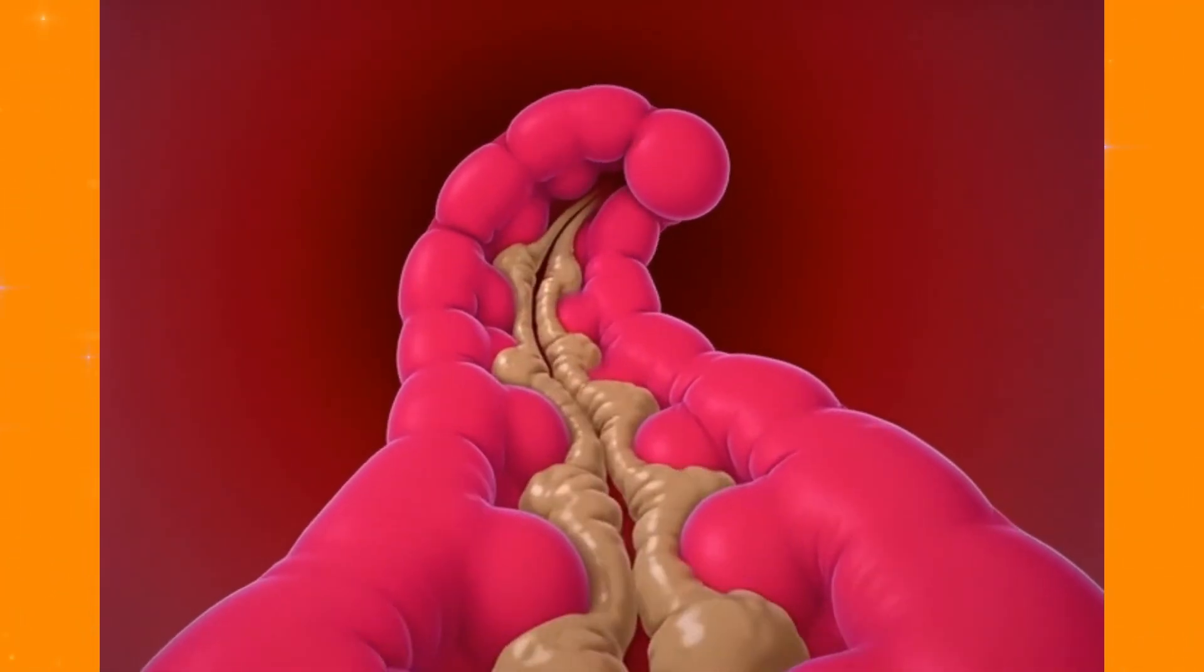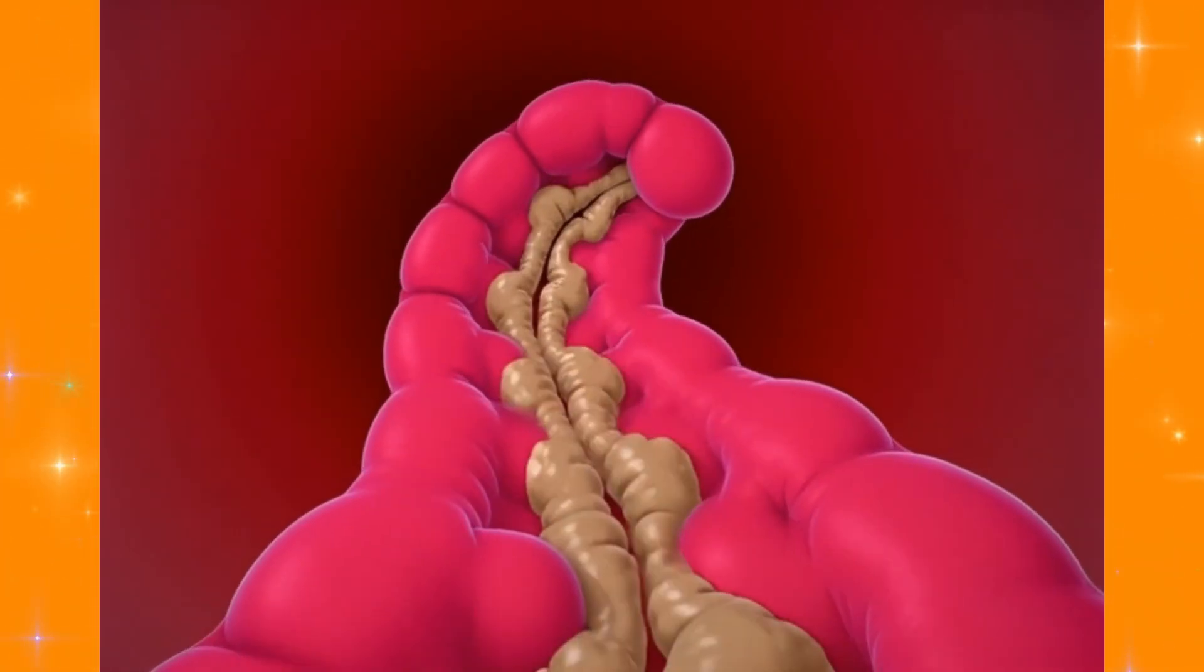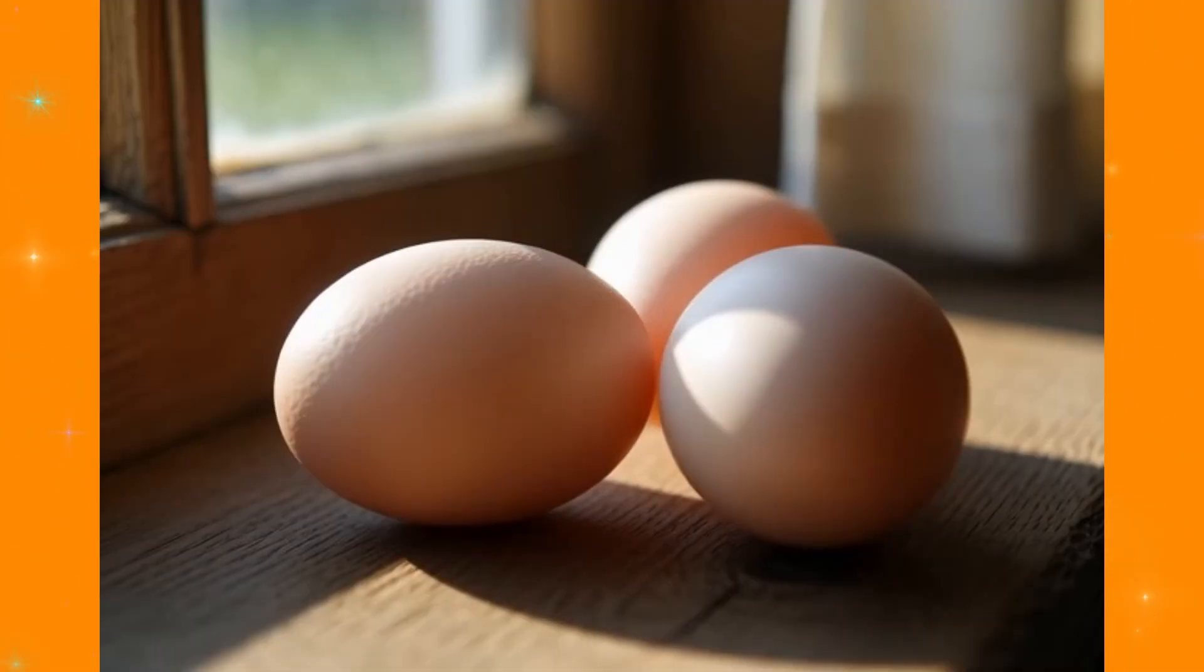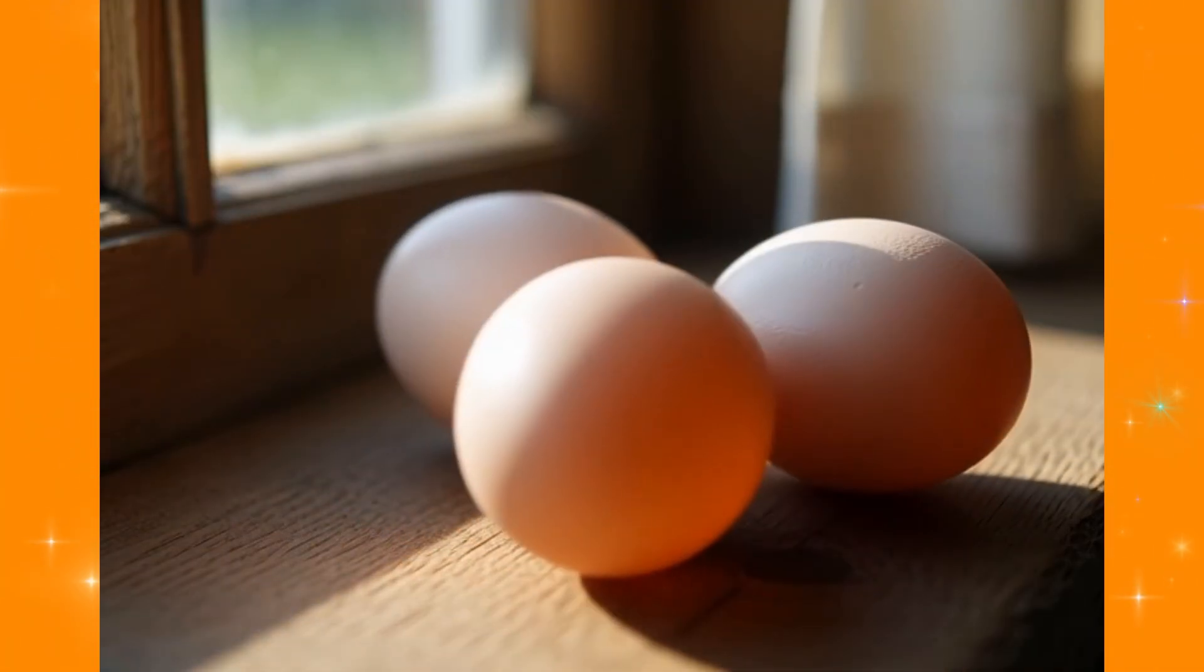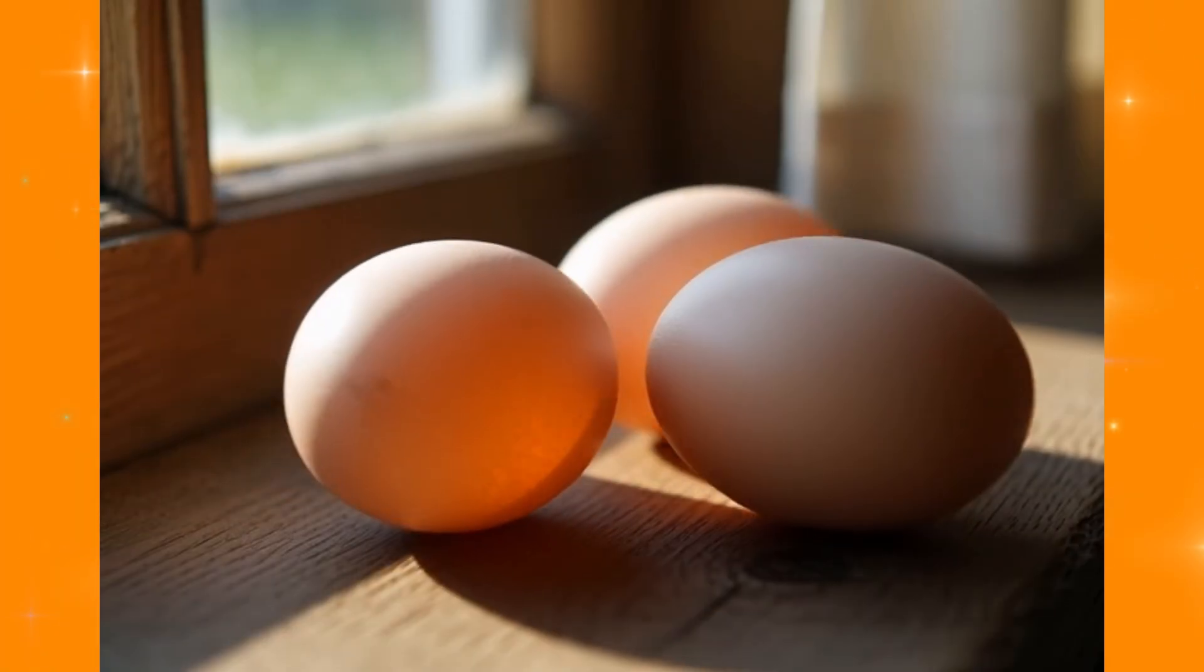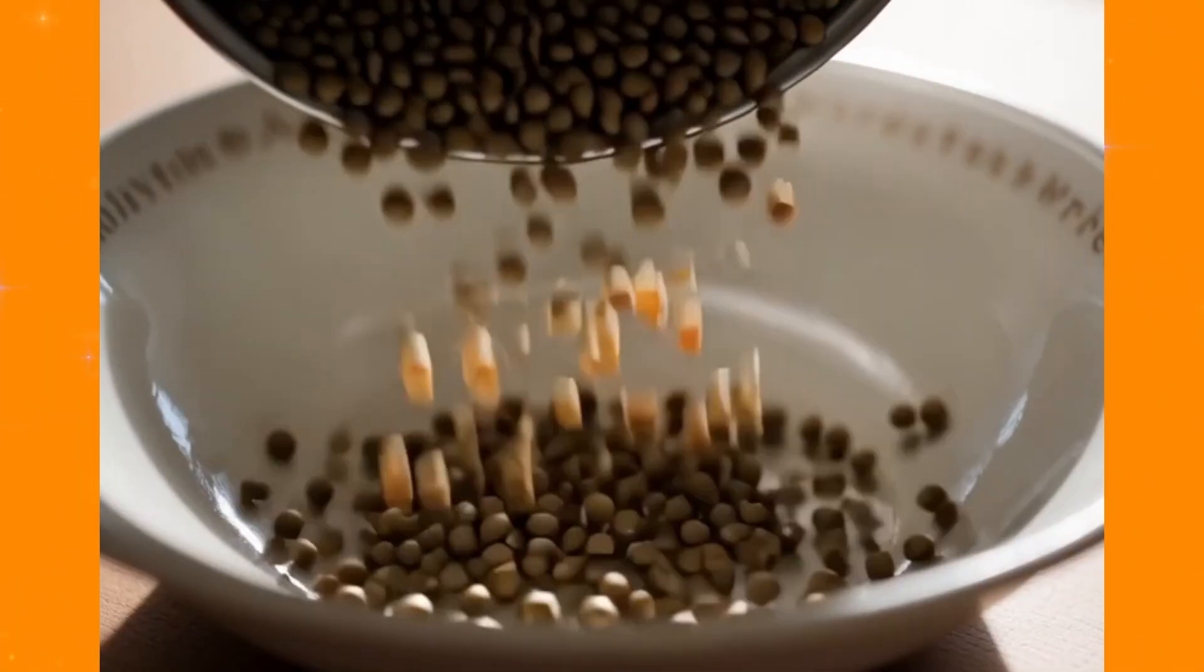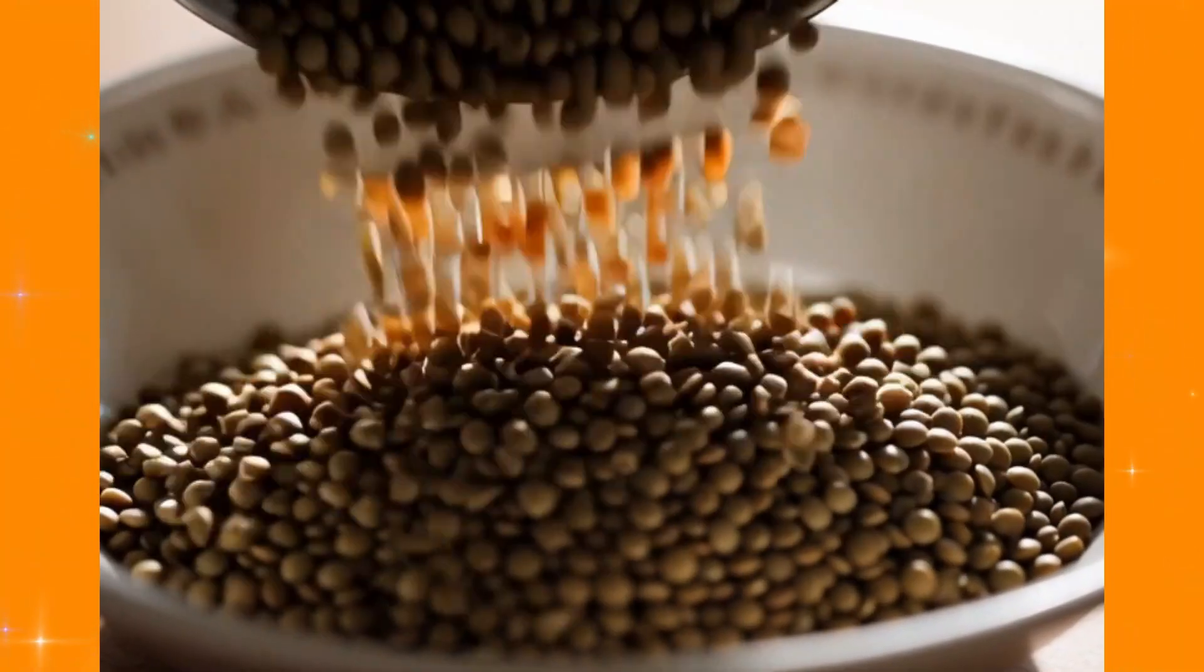For vegetarians, lentils are a complete game changer. One cup delivers 18 grams of protein plus resistant starch that feeds beneficial bacteria in your colon. These bacteria ferment the resistant starch into butyrate, the preferred fuel for your colon cells.